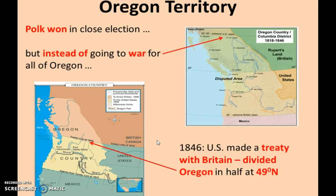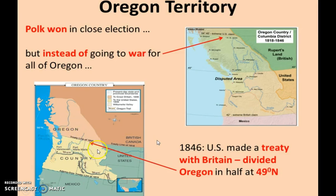Instead of going to war over Oregon — Polk had wanted to claim up to the 54-40 line — the U.S. reached a peaceful treaty with Britain, extending the 49th parallel all the way out to the Pacific Ocean, dividing the Oregon Territory. From this, the U.S. gained the modern-day states of Washington, Oregon, Idaho, and parts of Montana and Wyoming. That was accomplished peacefully.